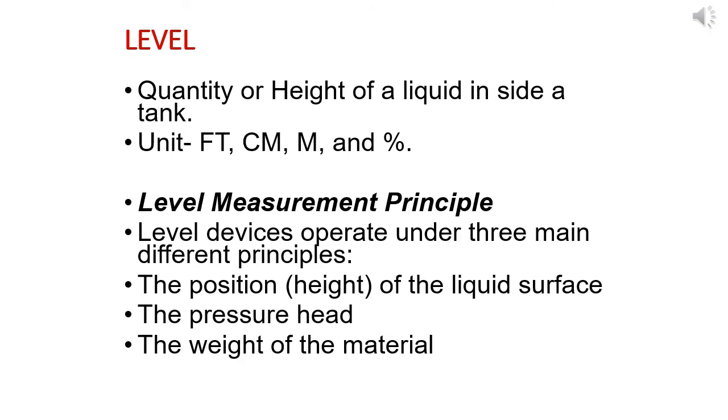What are the various instruments or measuring mechanisms used in the field? Level is the quantity or height of a liquid inside a tank. Normal units are feet, centimeter, meter, and percentage. Level devices operate under three main different principles: the position or height of the liquid surface, the pressure head inside the tank, and the weight of the material.